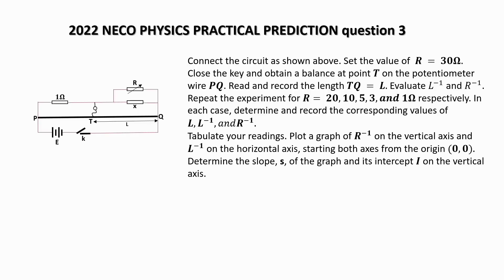Tabulate your readings. Plot the graph of R inverse on the vertical axis and L inverse on the horizontal axis, starting both axes from the origin. Determine the slope of the graph and its intercept on the vertical axis.